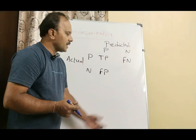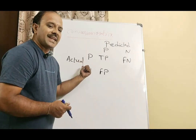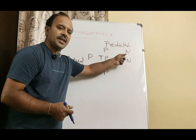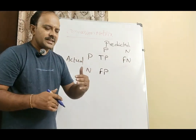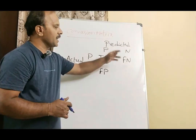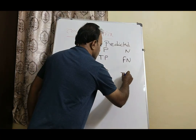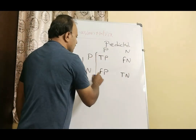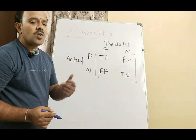The other entry in the matrix is when the actual status is negative and the model also predicted it as negative. By nature its status is negative and the model also predicted it as negative, so it is true negative. We can now clearly formulate a matrix with four entries.